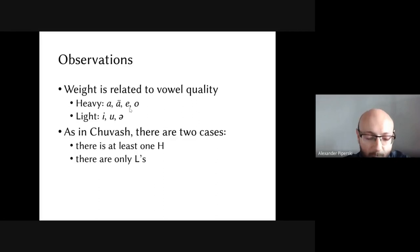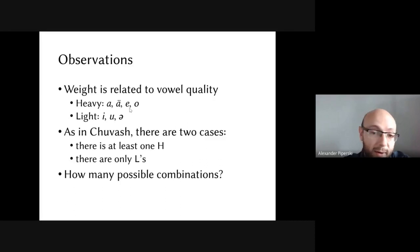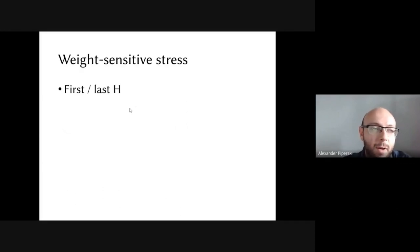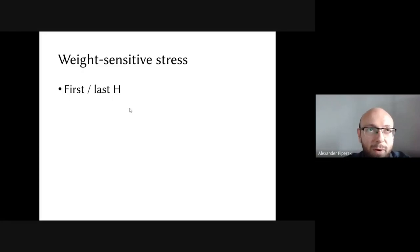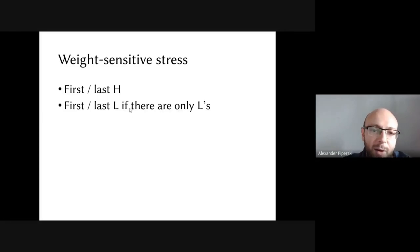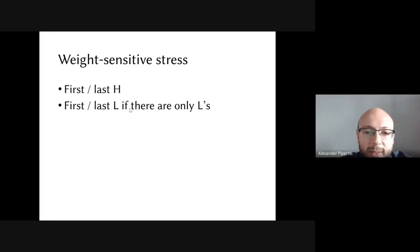In Moksha, there are two cases: words with at least one heavy vowel, and words with only light syllables. Weight-sensitive stress systems cross-linguistically tend to stress either the first or last heavy syllable, or the first or last light vowel when all are light — giving only 2 × 2 = 4 possible types. Starting from 450 trillion, we're now down to just 4 fundamental types, which is a dramatic restriction.